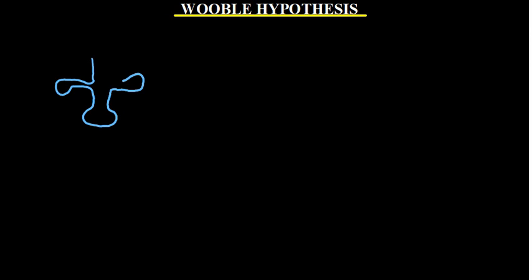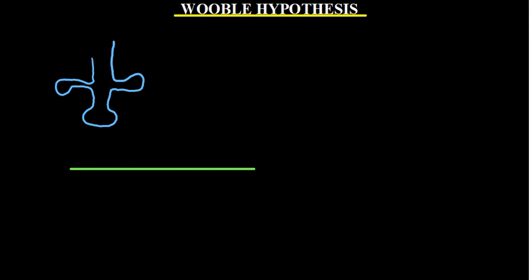tRNA has got these bases. tRNA looks like this — we have the acceptor arm and the anticodon arm. The anticodon arm contains the anticodons. Anticodons are bases on the anticodon arm of tRNA which are complementary to the bases on the mRNA. So if this is my mRNA, and we have bases ACG, the anticodons on the tRNA are going to be bases complementary to these codons.